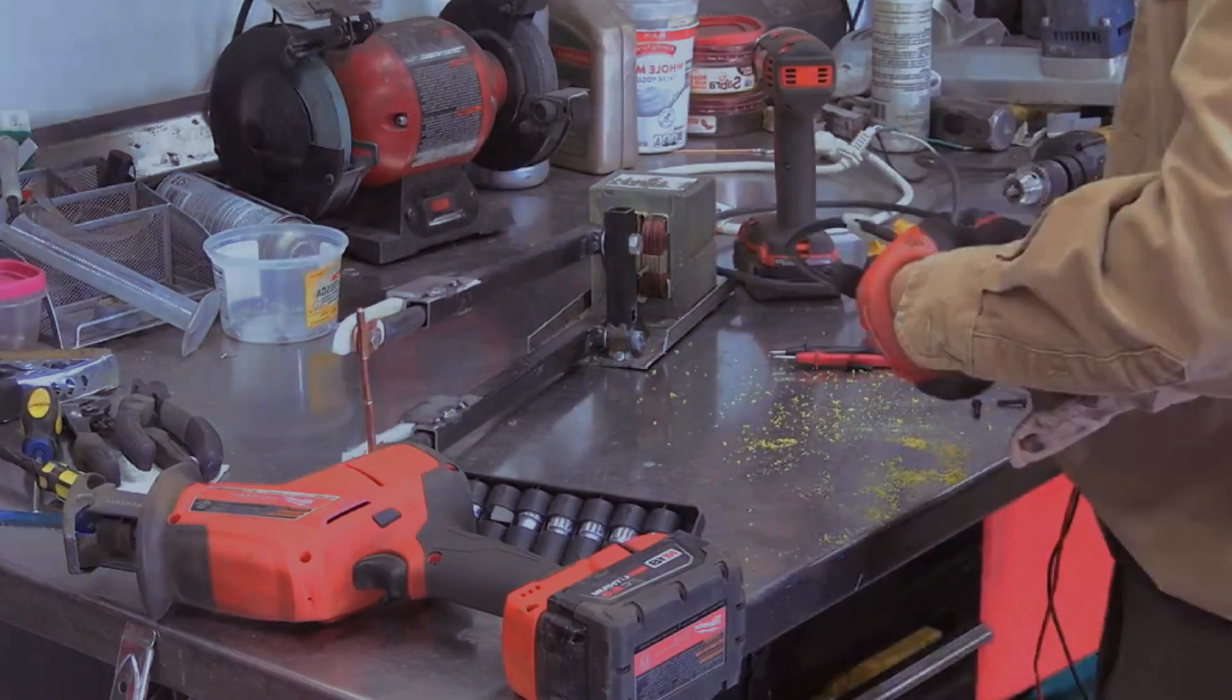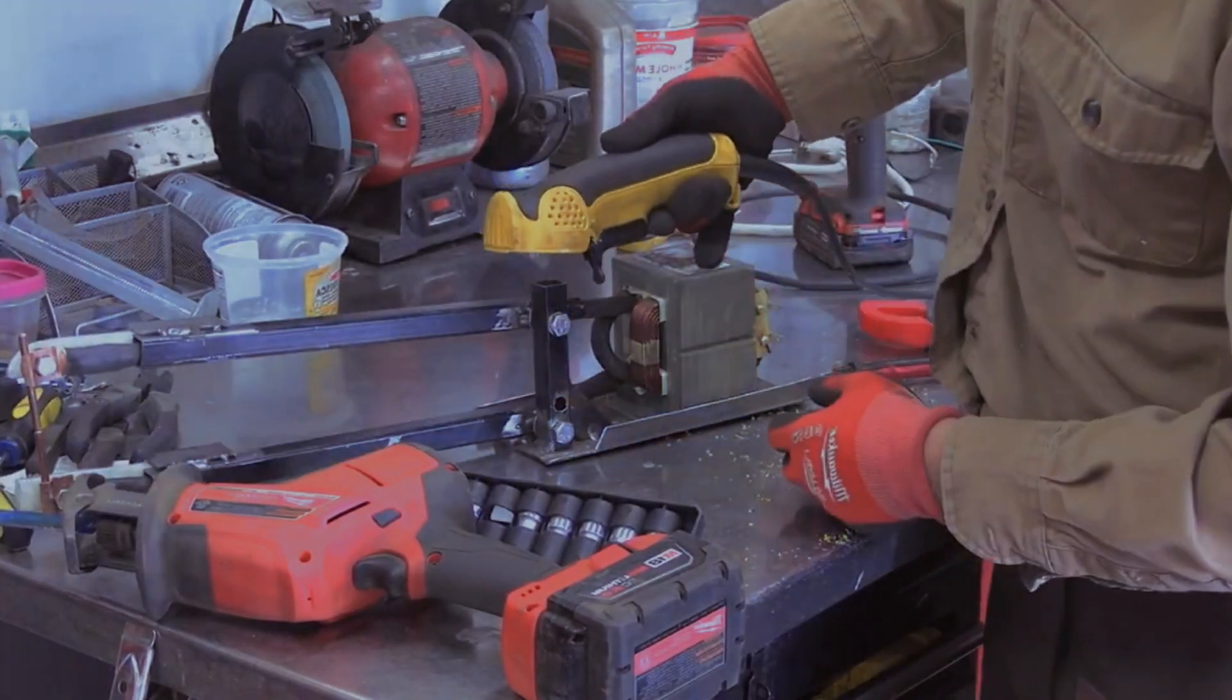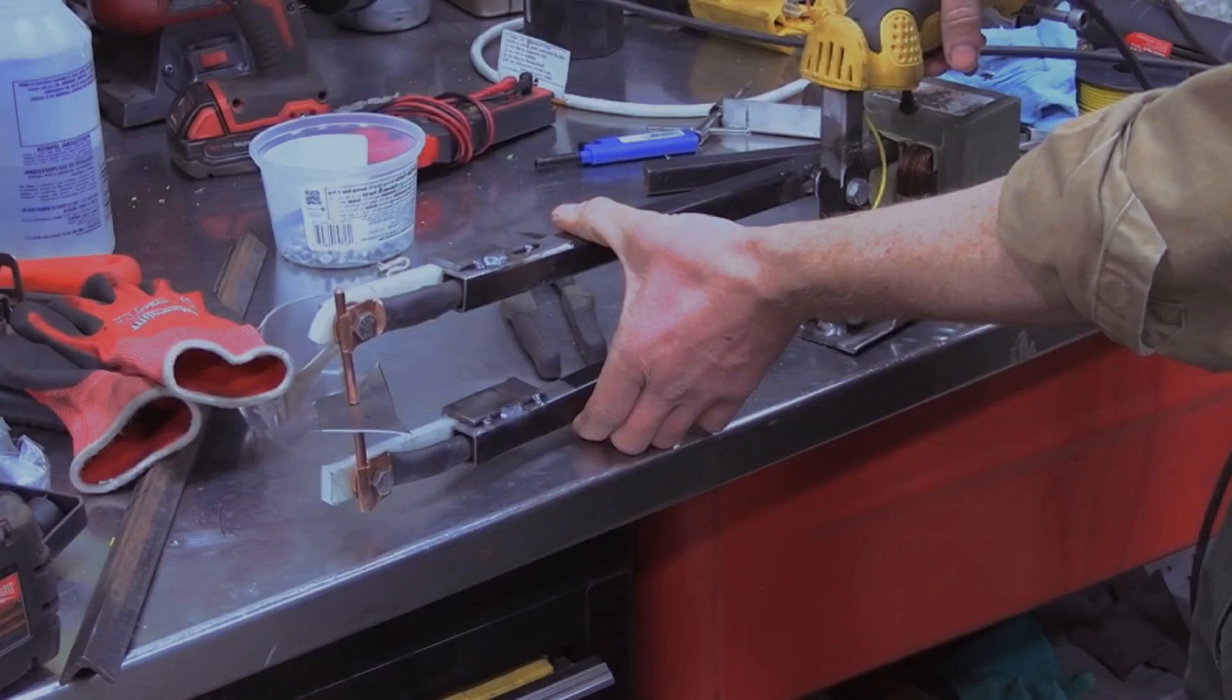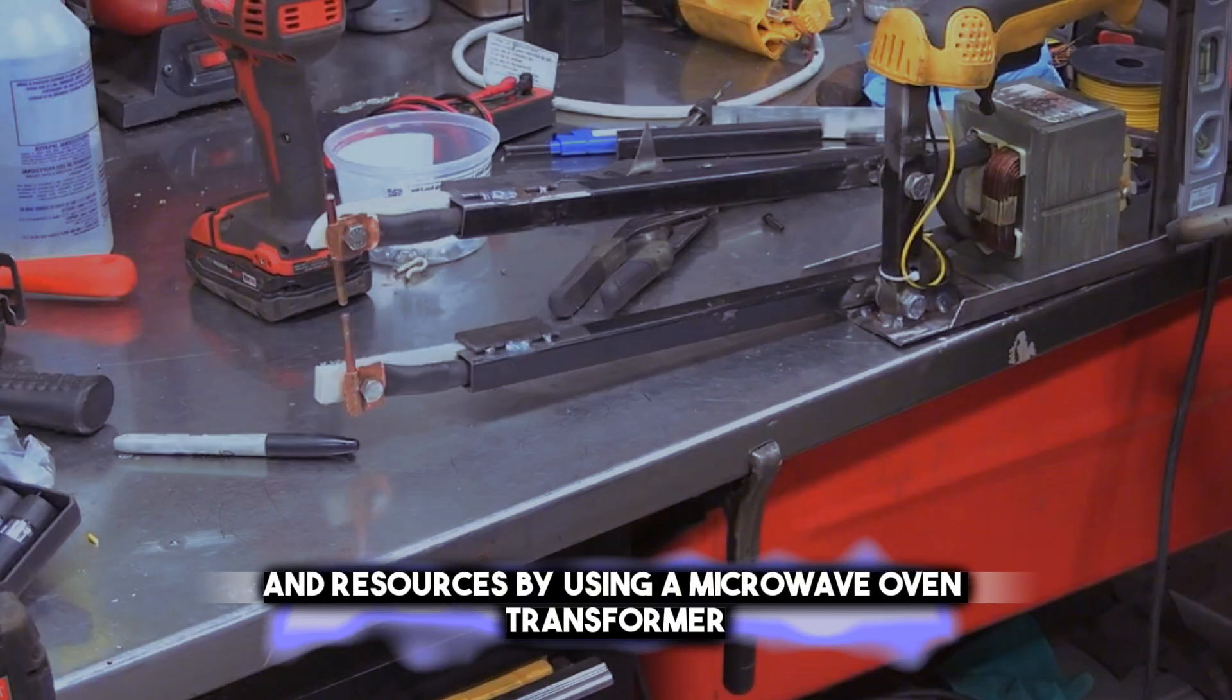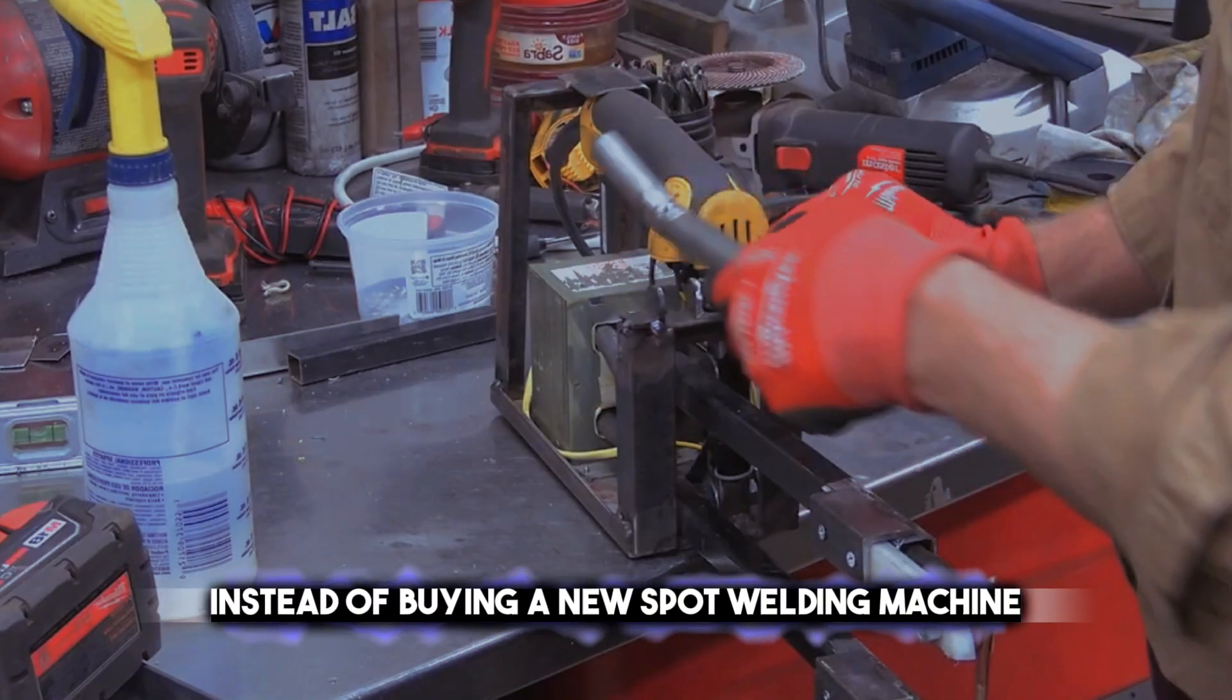This spot welding machine is inspiring because you can reuse and repurpose an old or broken appliance like a microwave oven and turn it into a useful and powerful welding machine. You can save money and resources by using a microwave oven transformer instead of buying a new spot welding machine.